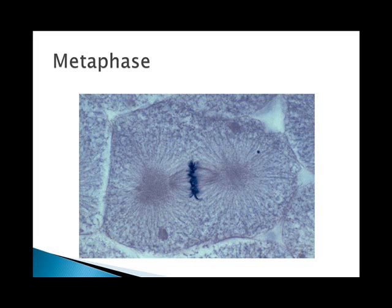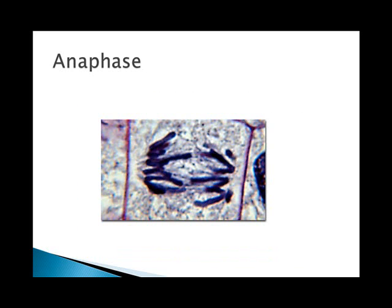Metaphase begins when the chromatid pairs line up along the center of the cell. This makes it possible for the chromatids to position themselves so that they can migrate accurately to the opposite sides of the cell. Chromosomes are most tightly condensed at this stage. The chromatids then separate and migrate toward the poles during anaphase, as the spindle fibers contract and pull them along.